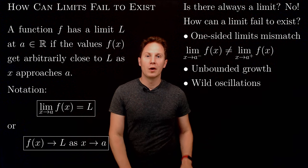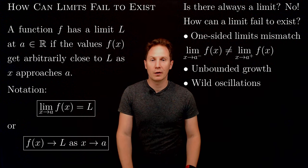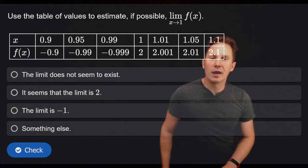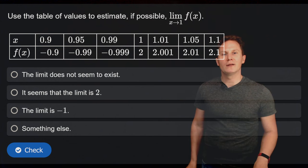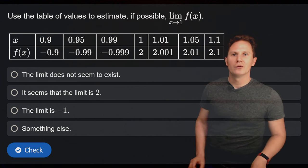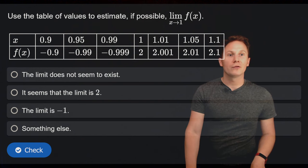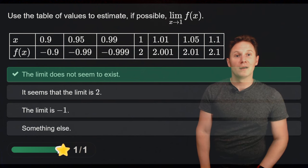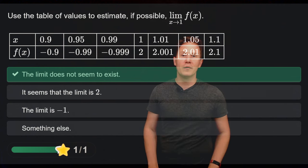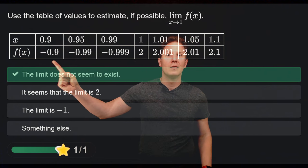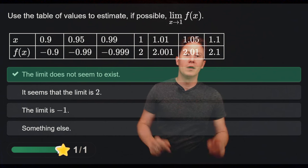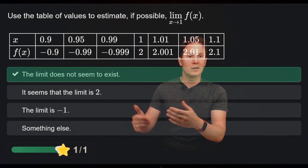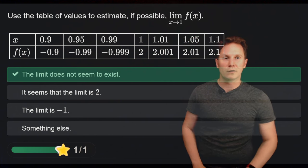Now it's time for some questions. Looking at this table of values to estimate if possible the limit as x approaches 1 of f(x): the left-hand limit seems to be negative 1 whereas the right-hand limit seems to be positive 2. The one-sided limits do not match, hence the limit does not seem to exist.